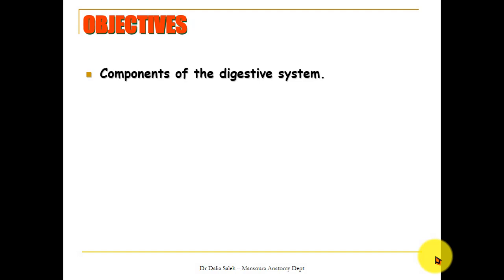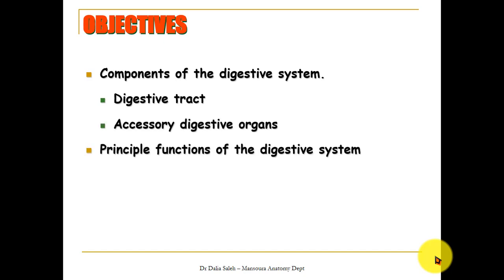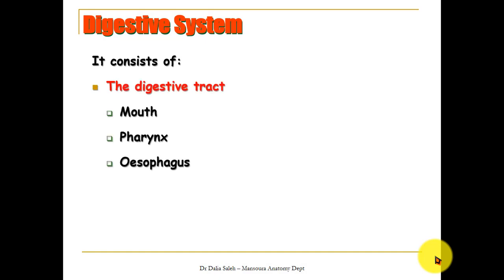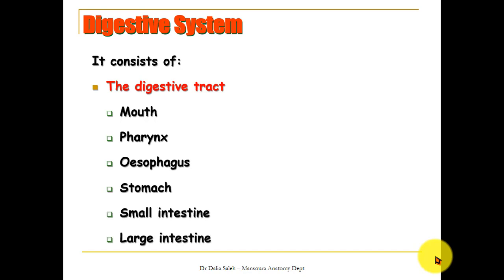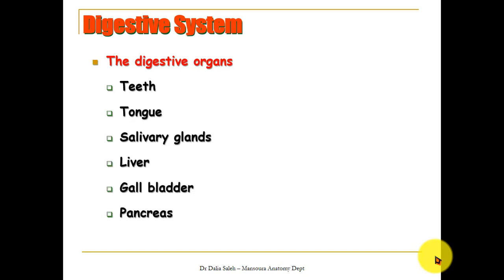The objectives of my presentation are as follows. First, we will discuss the components of the digestive system: the digestive tract and the accessory digestive organs. Then we will talk about the principal functions of the digestive system. The digestive tract consists of the mouth, pharynx, esophagus, stomach, small intestine, and large intestine. The accessory digestive organs are the teeth, tongue, salivary glands, liver, gallbladder, and pancreas.